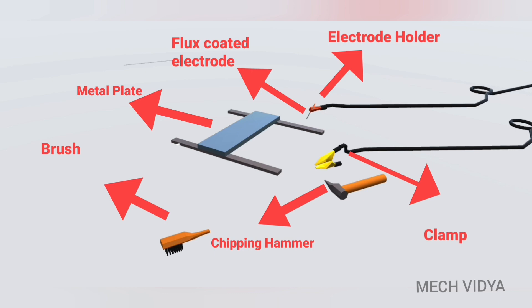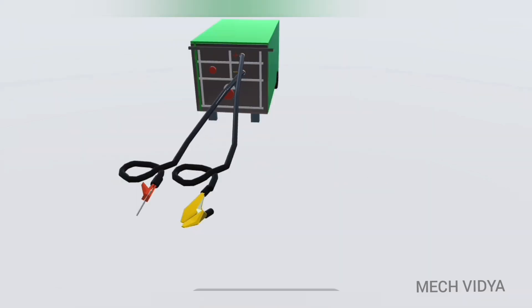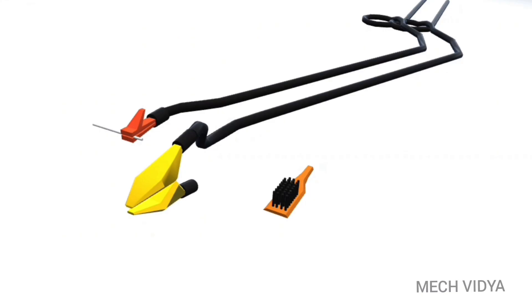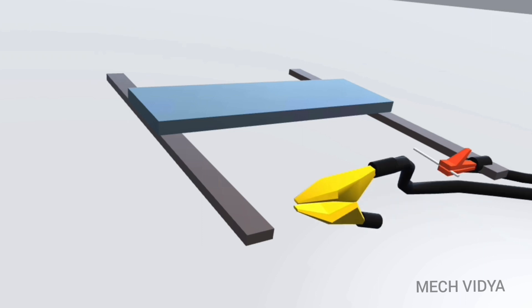Now the workpiece will be connected to the positive terminal of the DC welding generator, while we will connect the electrode to the negative terminal to form a complete circuit. The earthing clamp is now fixed to the metallic table.